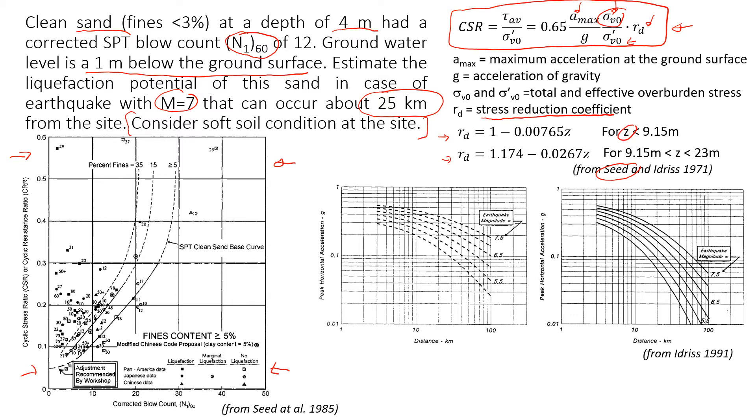So this one for the depth less than 9.15 meters and this one for the depth that is greater than 9.15 meters but less than 23 meters. In our case the depth is four meters, this means we're going to use this value of stress reduction coefficient. Now let's find it.